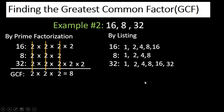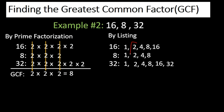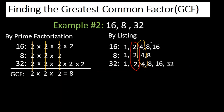Let's highlight the common factors. The factor 2 is common to 16, 8, and 32. The factor 4 is also common to all three. And 8 is also common as a factor to 16, 8, and 32. Since we're looking for the greatest common factor, 8 is the greatest common factor of 16, 8, and 32.